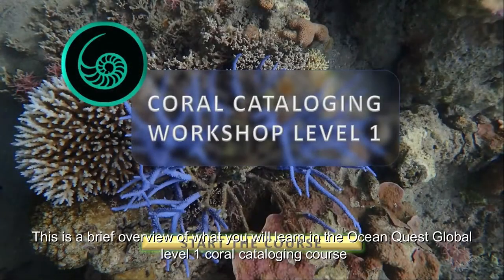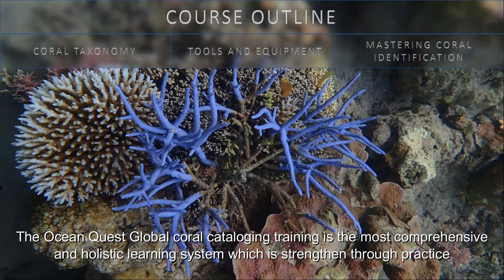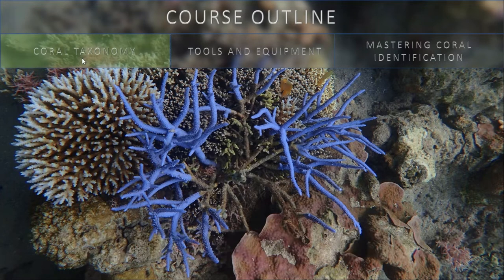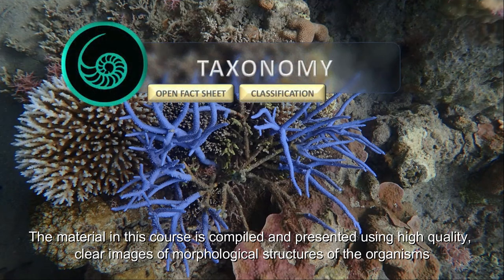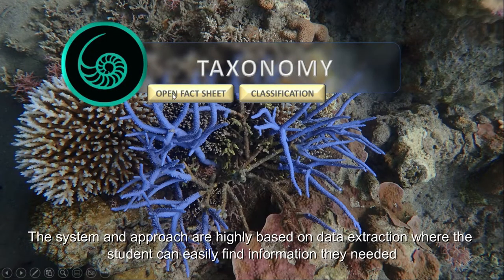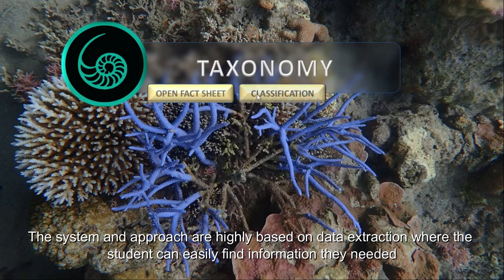This is a brief overview of what you will learn in the OceanQuest Global Level 1 Coral Cataloging course. The OceanQuest Global Coral Cataloging training is the most comprehensive and holistic learning system, which is strengthened through practice. The material in this course is compiled and presented using high quality, clear images of morphological structures of the organisms. The system and approach are highly based on data extraction, where the student can easily find the information they need.